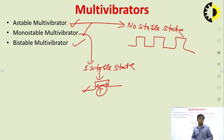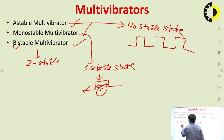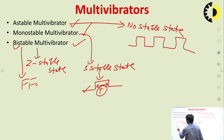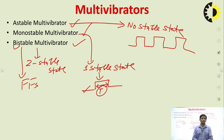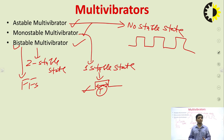The monostable multivibrator is used to generate a pulse of a particular duration. As for the bistable multivibrator, it has two stable states. The example of bistable multivibrators are flip-flops, which have two stable output states — 0 and 1 — and the output changes state only when there is a clock pulse. For oscillators, we concentrate only on the astable multivibrator since it is an oscillator.